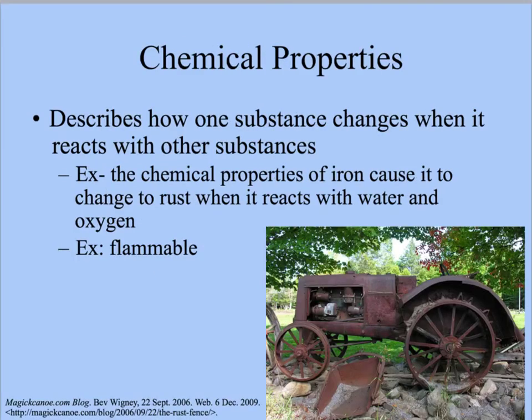Chemical properties describe how a substance will change or react with other substances. The keyword here is react. If there's a reaction going on, that's a chemical property. So, for example, if we have iron rusting, that rusting is a reaction with water and oxygen in the air. Another example would be flammable, because that's a different type of reaction.